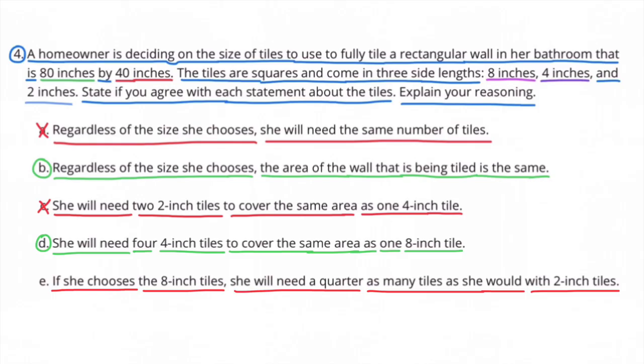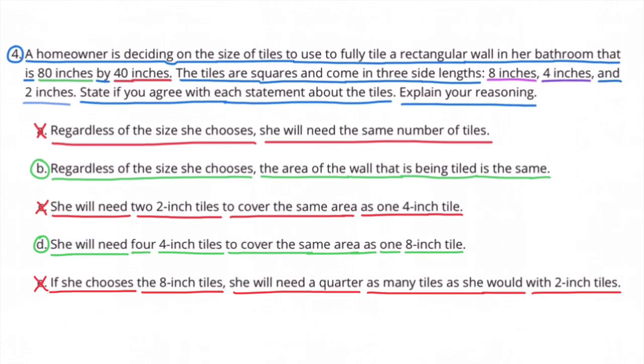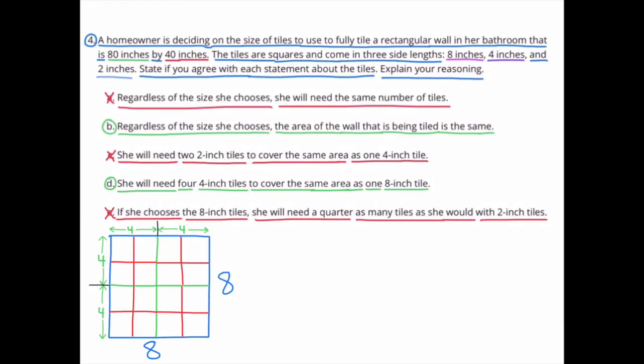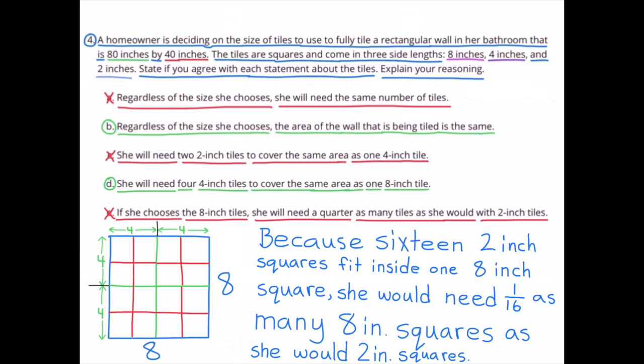If she chooses the 8-inch tiles, she will need a quarter as many tiles as she would with 2-inch tiles. That's not true because sixteen 2-inch squares fit inside one 8-inch square. She would need 1/16th as many 8-inch squares as she would with 2-inch squares.